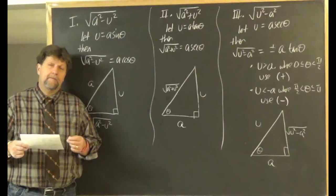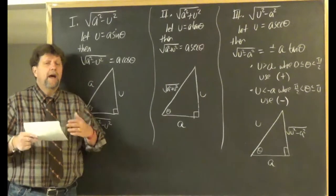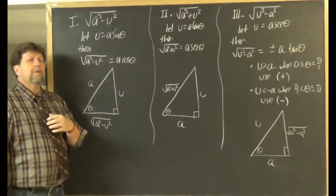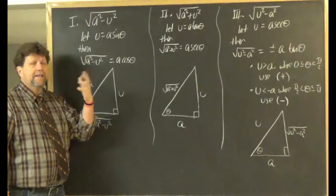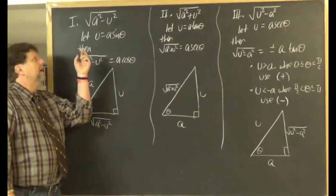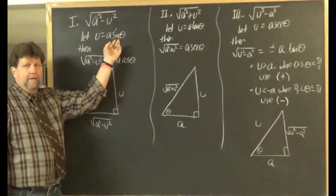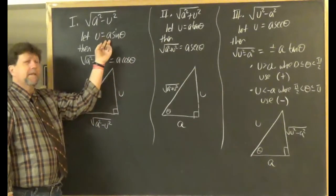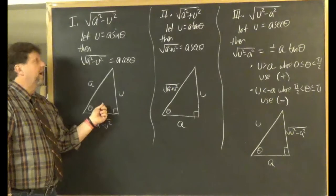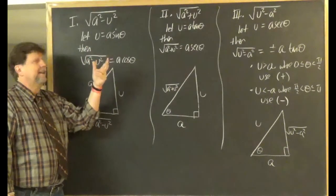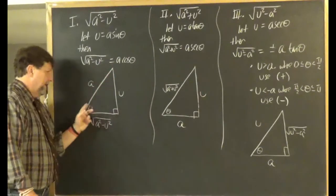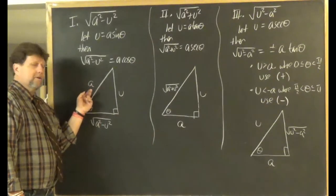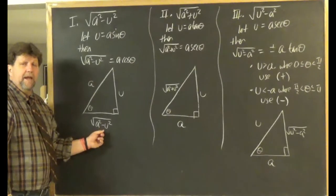Here are the mechanics of the trigonometric substitution, broken into three cases. Case one: if you see the radical √(a² − u²) in the integrand, let u = a sinθ, and the radical becomes a cosθ. From this substitution you sketch the corresponding right triangle, where sinθ = u/a (opposite over hypotenuse), and the missing side is found using the Pythagorean theorem.